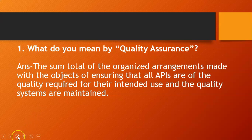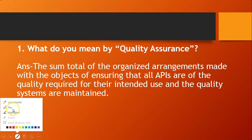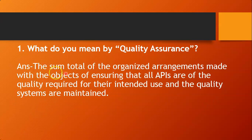The answer to 'what is quality assurance' is: it is the sum total of the organized arrangement made with the object of ensuring that all APIs are of the quality required for their intended use, and the quality systems which are maintained. When you understand this concept, you can give the answer in your own words — it is not necessary to memorize these sentences exactly.